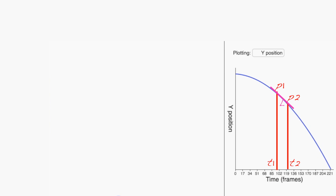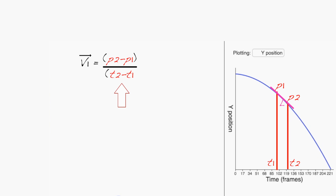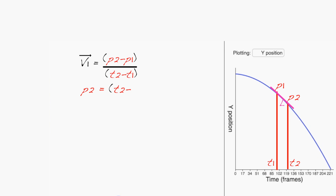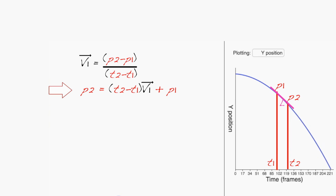As an equation, the slope of L — that is, the velocity v1 — is given by the change in position divided by the change in time. If we know the position and velocity at time t1, then we can compute the position at time t2 by rearranging this equation to solve for p2. So knowing the particle's position and velocity at time t1, we can compute the position at time t2 using this formula.